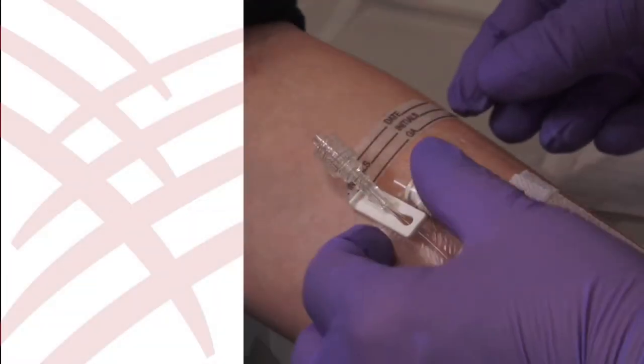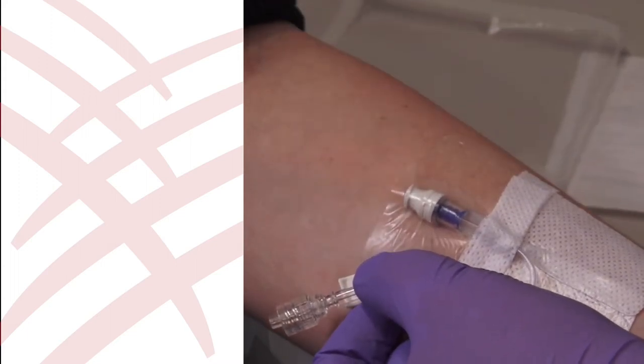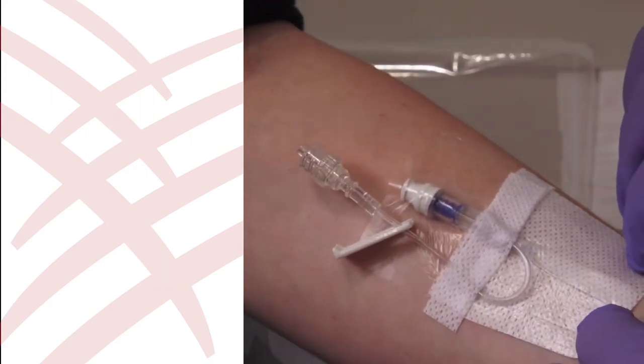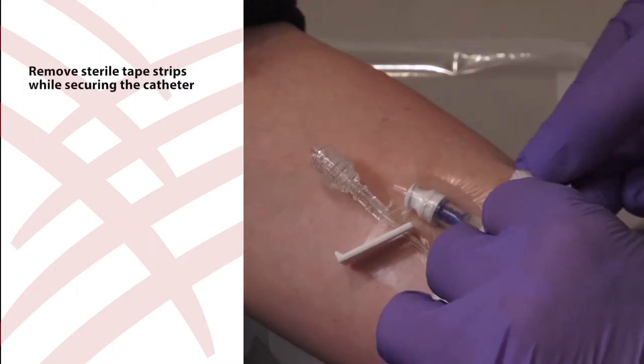To remove the dressing, first remove the date record label from the edge of the dressing. Carefully remove the sterile tape strips while securing the catheter.